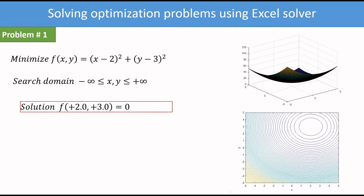The first function is a simple minimization function: f = (x-2)² + (y-3)². The search domain is minus infinity to plus infinity, so both x and y can vary freely. The solution of this problem is (2, 3), that means positive 2 and positive 3. I have also shown the surface plot as well as the contour plot, and you can see from the contour plot that the minimum point is at 2 and 3.